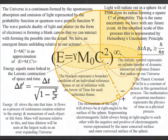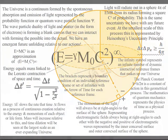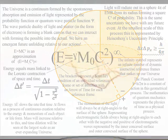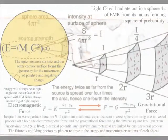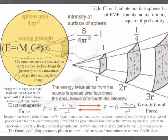The C² represents light radiating out in a sphere of electromagnetic radiation from its radius, forming a square of probability, forming the uncertainties and possibilities of everyday life.